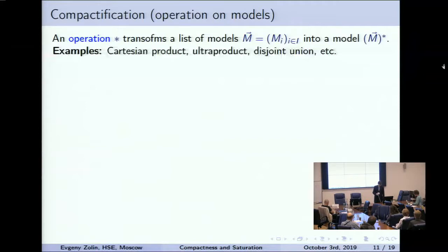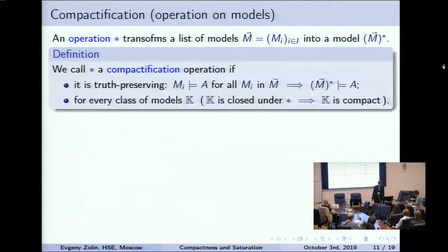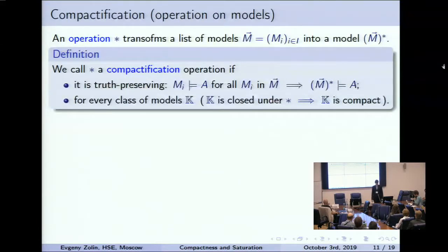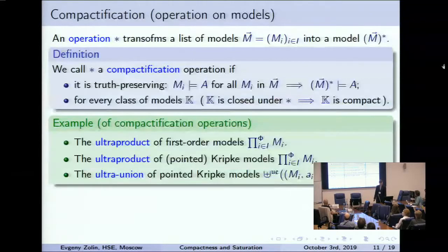We call an operation a compactification operation if, firstly, it is truth-preserving: if some formula was true in all models in the arguments, then the resulting model is again a model of that formula. And closure under this operation guarantees that the class is compact. Examples: the ultraproduct of first-order models or of Kripke models are compactification operations.